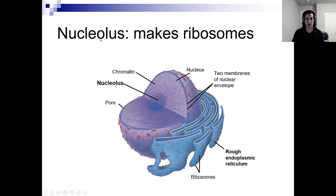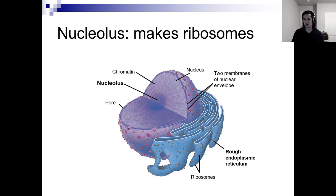The nucleolus is where you make ribosomes. Within your nucleus you have an area dedicated to making ribosomes. Here you'll find a lot of rRNA — your ribosomes are composed of protein and rRNA. That's another function of RNA.